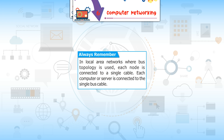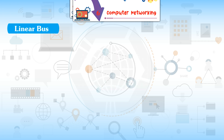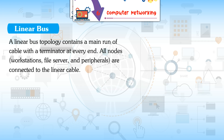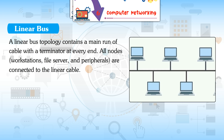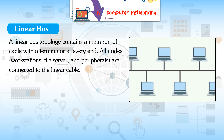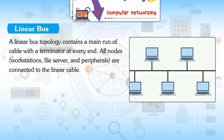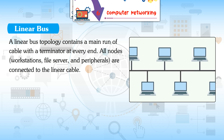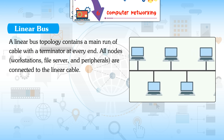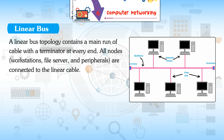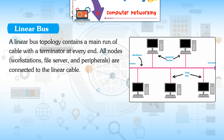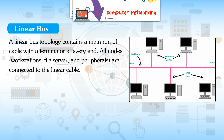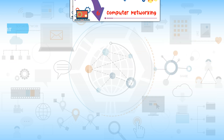Linear Bus topology contains a main run cable with a terminator at every end. All nodes — workstations, file server, and peripherals — are connected to the linear cable.